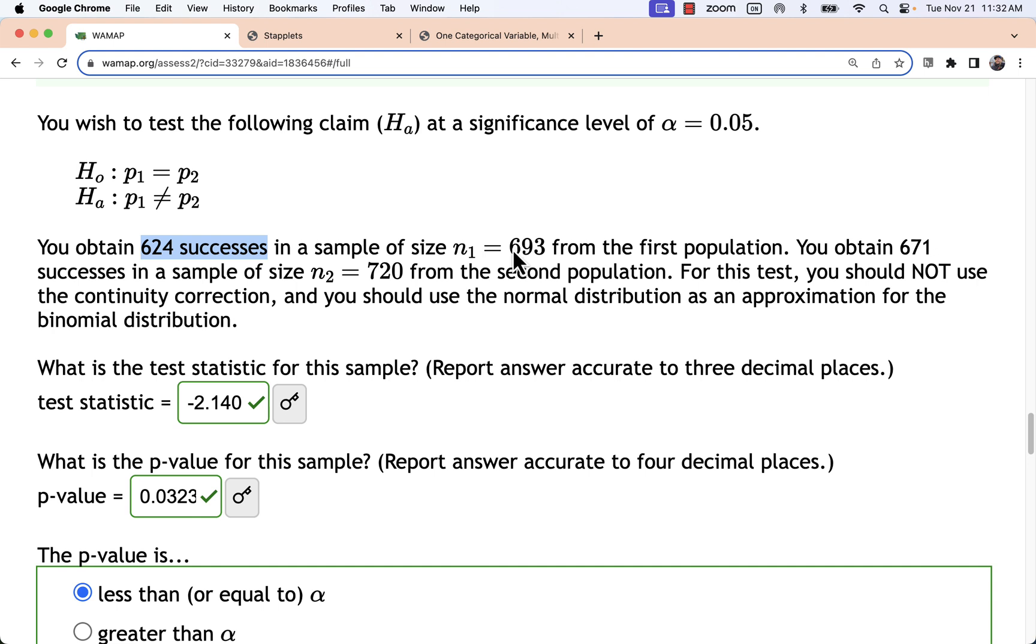We don't really know what that's describing but we'll look at it as a proportion. So 624 out of 693. The thing is in Staplet we're going to enter it in as successes and failures and it will do the rest of the work. So 624 successes out of 693 is going to leave a certain number of failures we subtract to find that. So 693 minus 624.